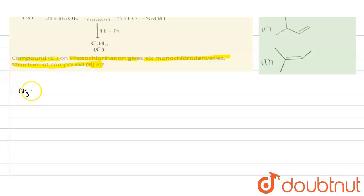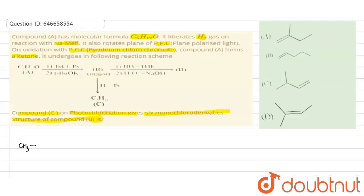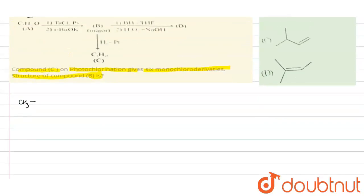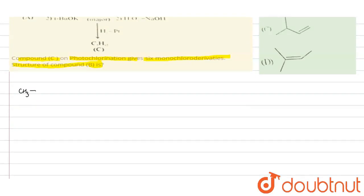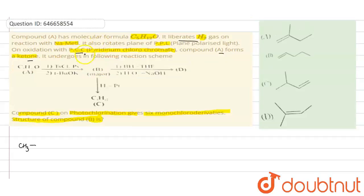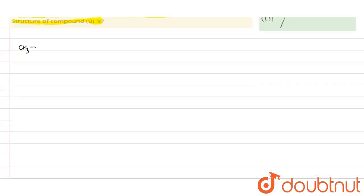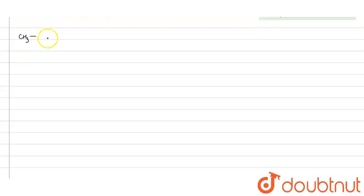Since compound A is liberating H2 gas, it is an alcohol. It is reacting with pyridinium chlorochromate and forming a ketone. So it either be a primary alcohol or secondary alcohol. It cannot be a primary alcohol - it will be a secondary alcohol only, because secondary alcohols form ketones and primary alcohols form aldehydes.